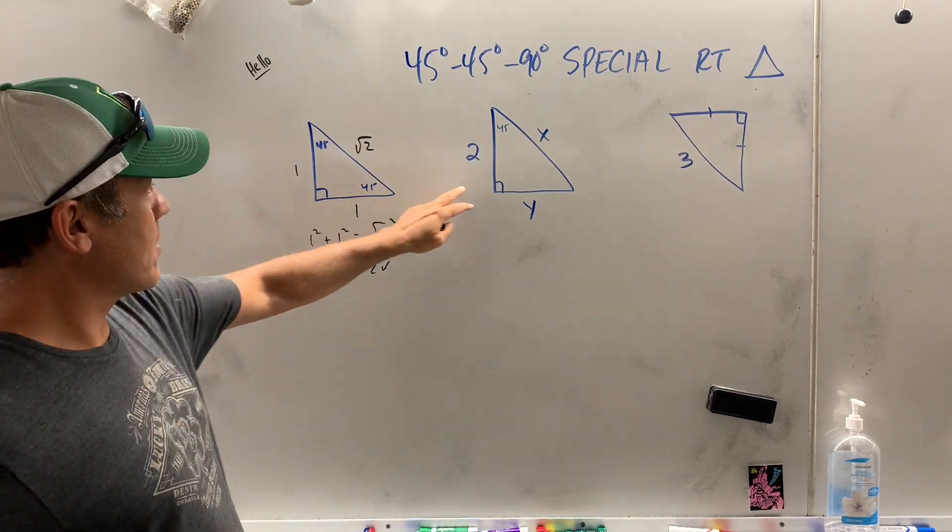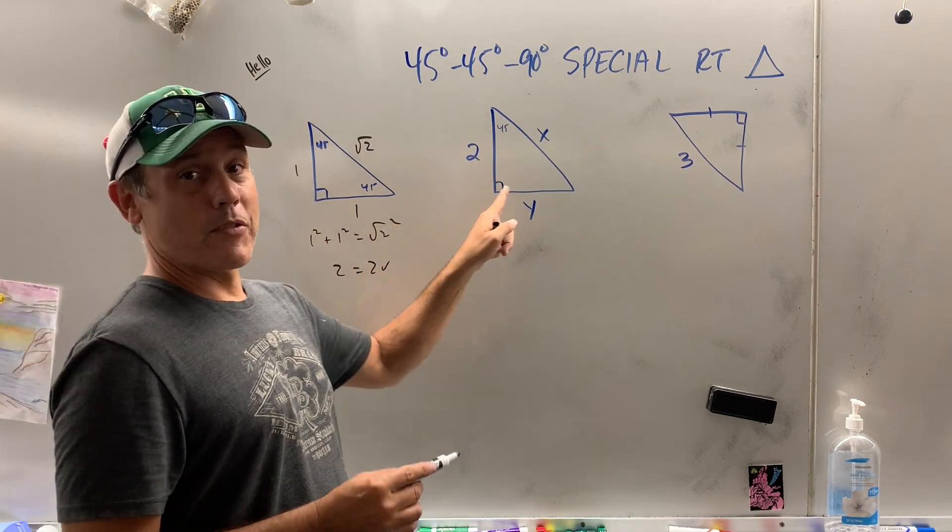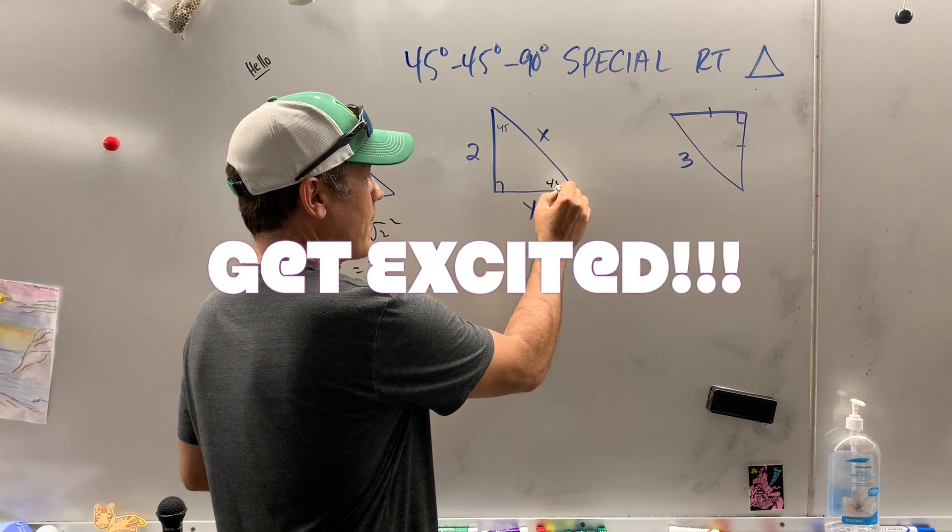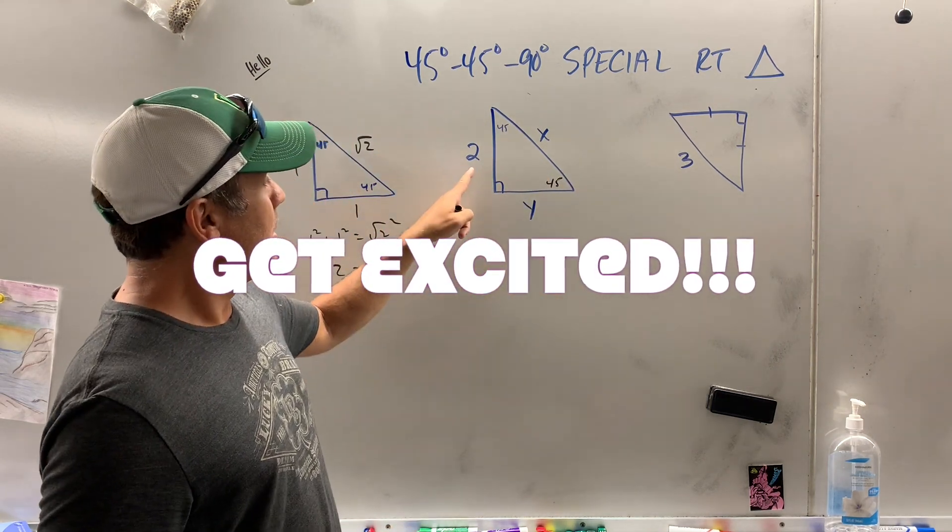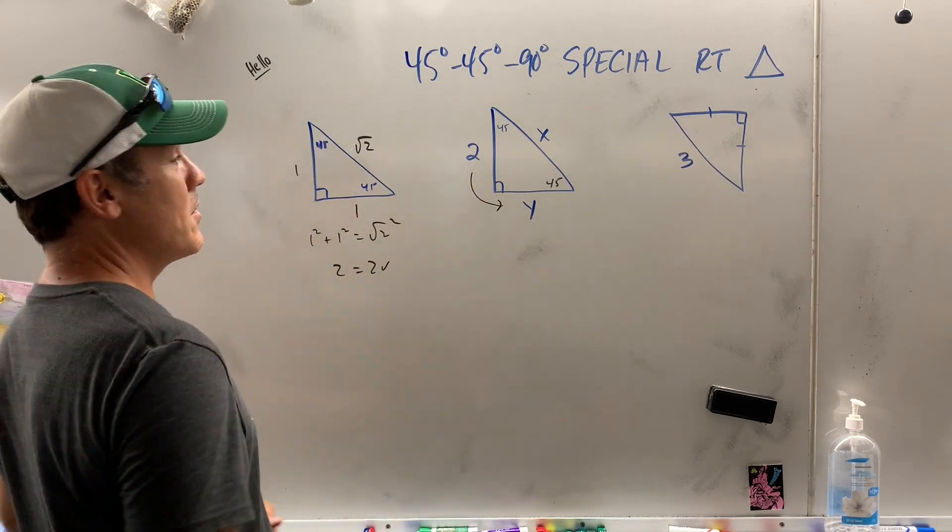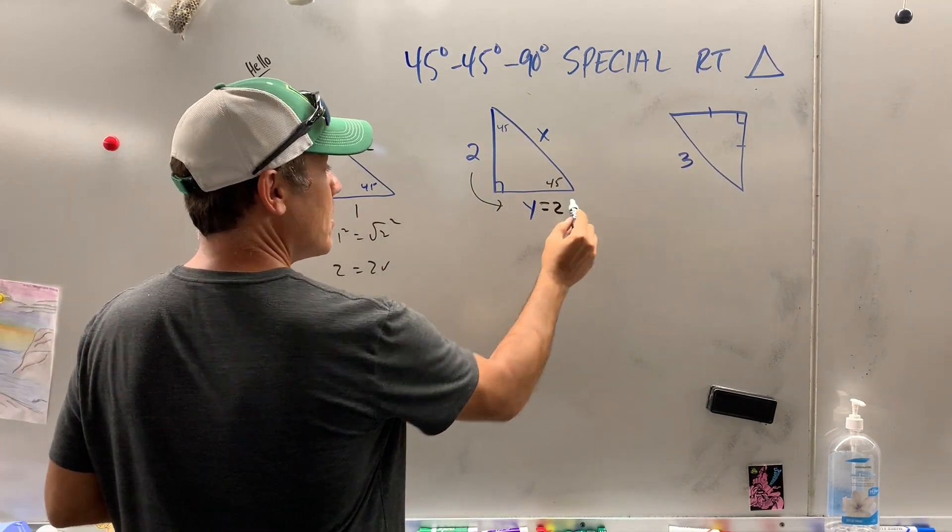So this triangle here, by the way, if I have a right triangle and I see 45, I'm getting a little excited because I know that's 45. So these two sides are the same. So how do I go from here to here? The value y has to be what? 2.